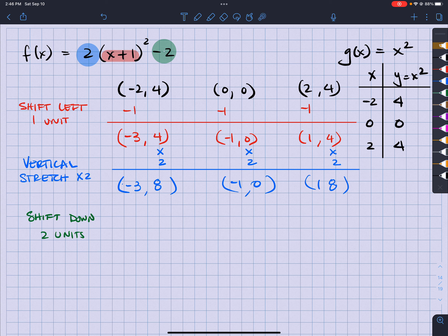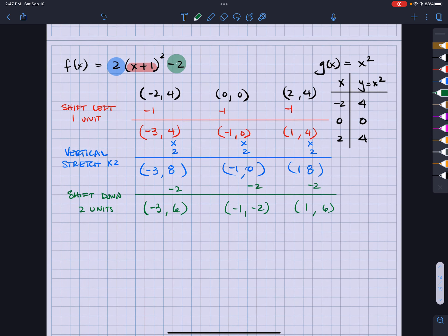Because it's outside the parentheses, right? Inside, outside. Outside the parentheses is straightforward. So it's subtracting 2, so that means I'm shifting down. So I'm only subtracting 2 from the y value. So I'm going to have a negative 3, 6, a negative 1, negative 2, and a 1, comma, 6. Alright, let's graph this.